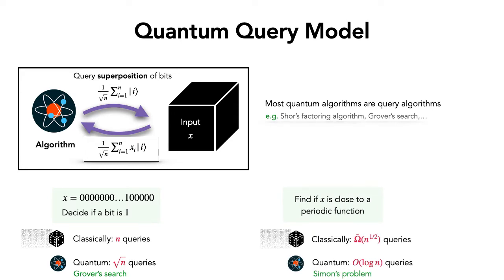Consider a different task where the advantage is even better. Suppose you are given a truth table of a Boolean function and want to check whether this function is close to being periodic or far from it — periodic meaning it repeats after a certain period. Classically this requires polynomially many queries, but Simon's algorithm solves it with only log n quantum queries, giving an exponential advantage.